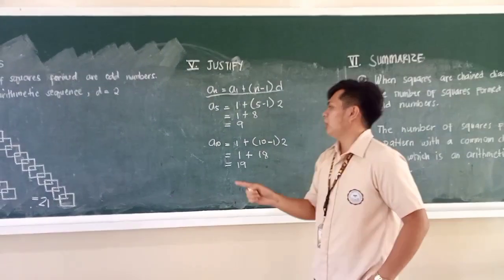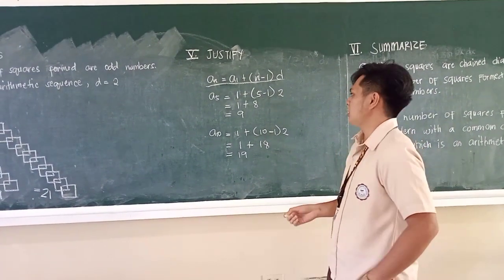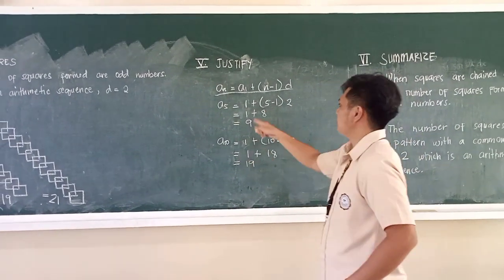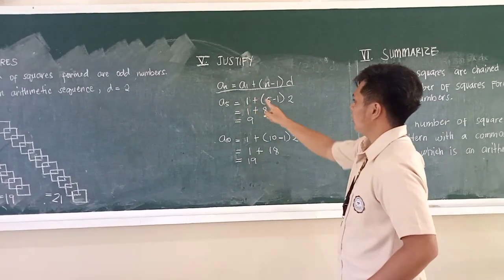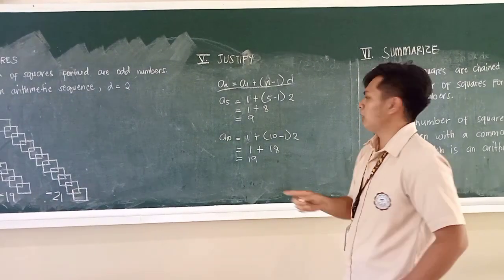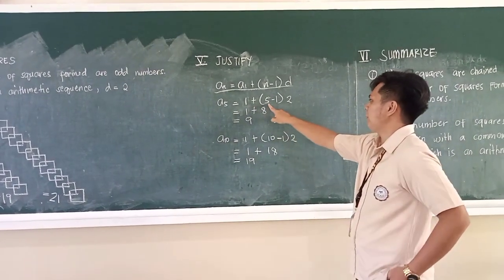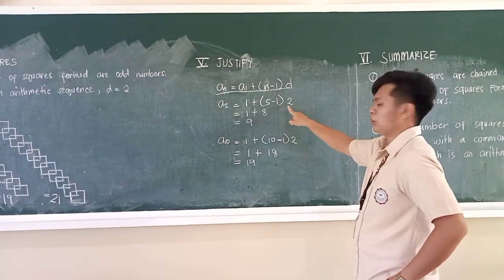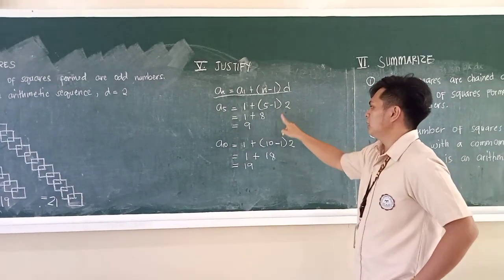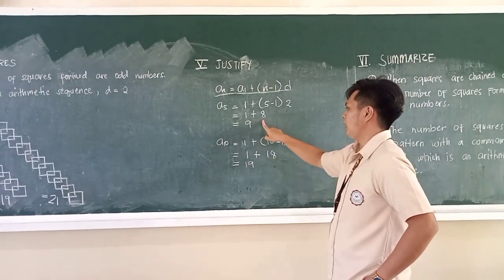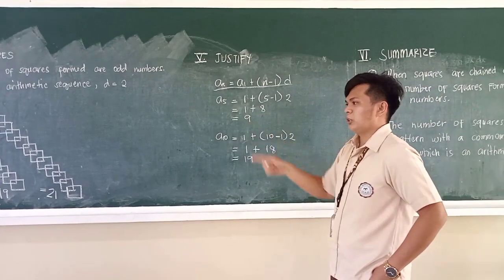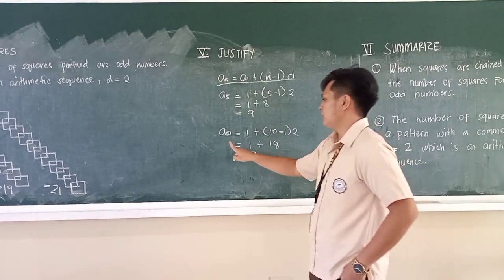We will try with five number of squares chained. So we will just substitute with the first term. The first term is one. So substitute here the number of squares, which is five, minus one times two, which is the common difference. So it will result to one plus eight equals nine, which is correct in our table.